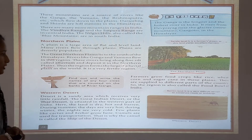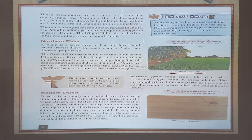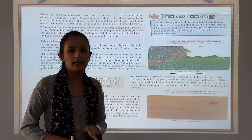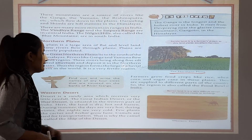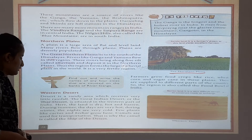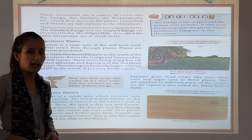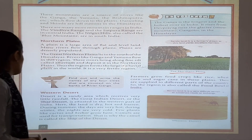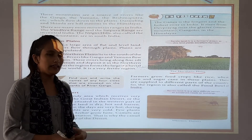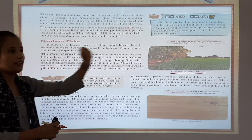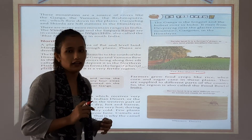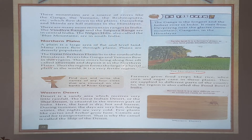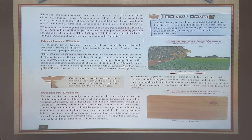A desert is a sandy area which receives very little rainfall. The great Indian desert, also called the Thar Desert, is situated in the western part of India. Here the land is dry and hot. Winters have very cold nights. Few plants like cactus and shrubs are grown here.